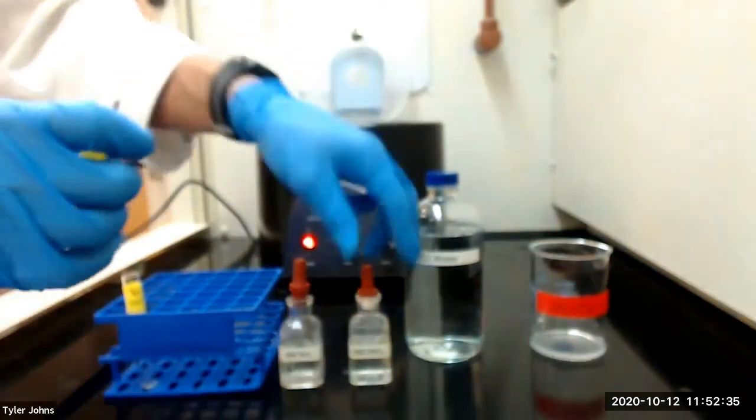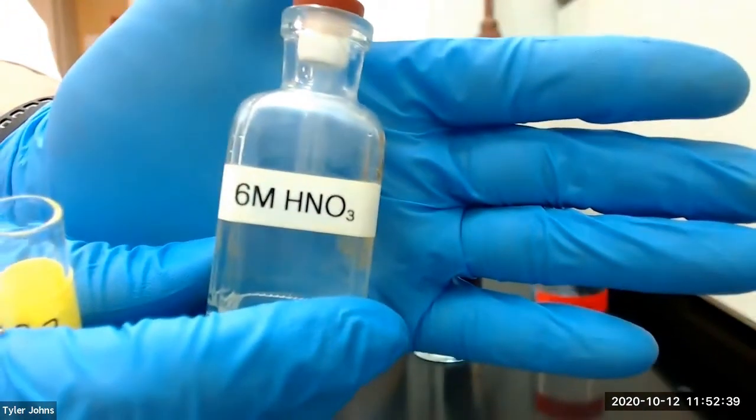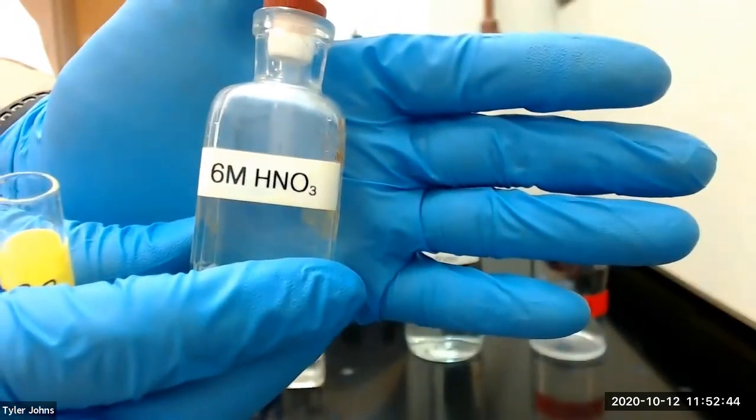We will then acidify our S3 solution with dropwise addition of six molar nitric acid until a blue piece of litmus paper turns red.